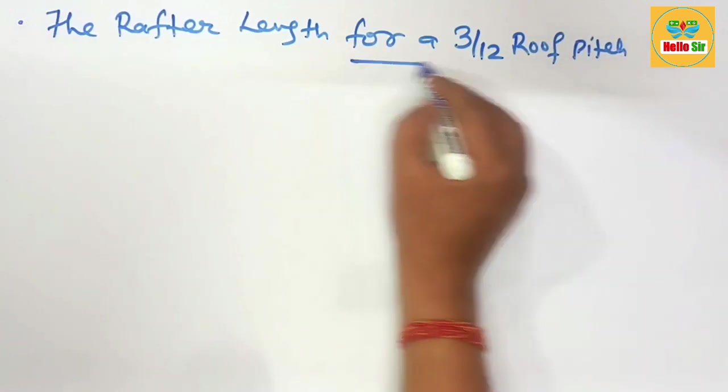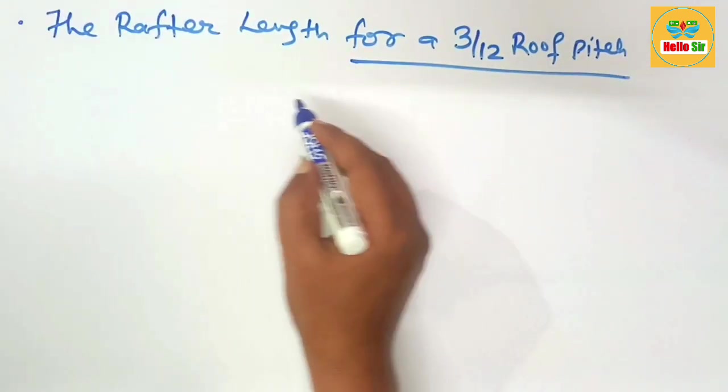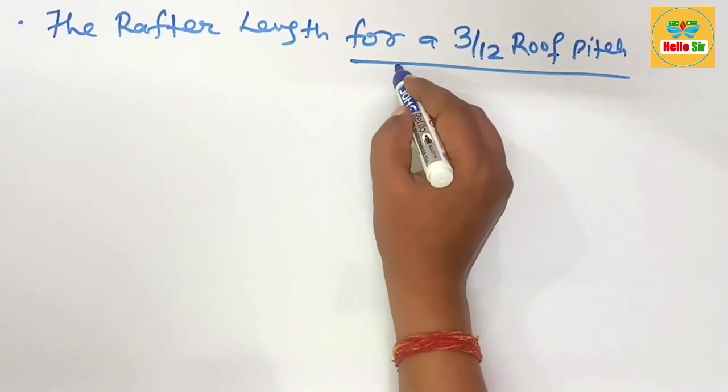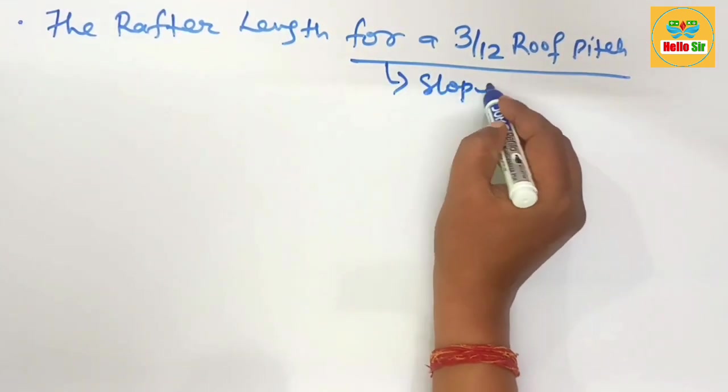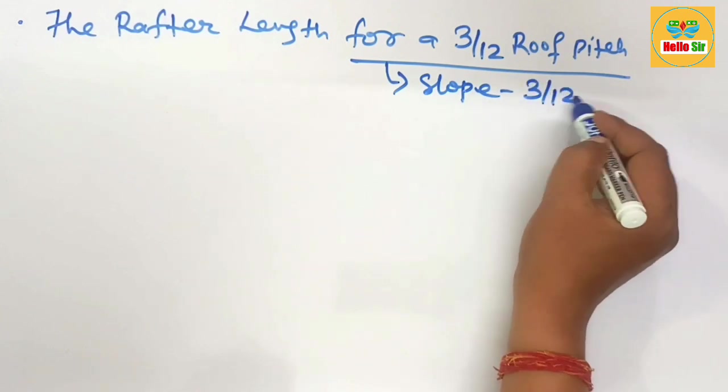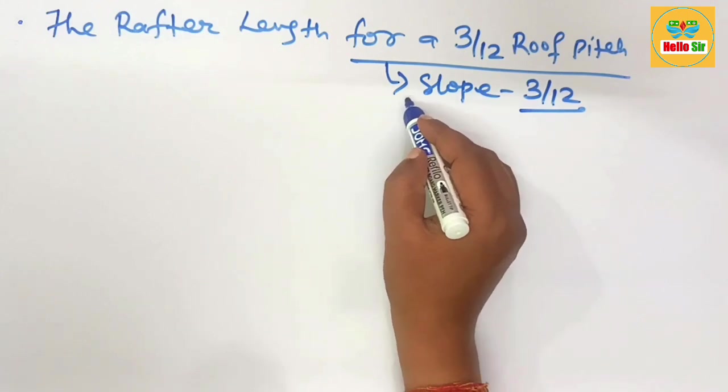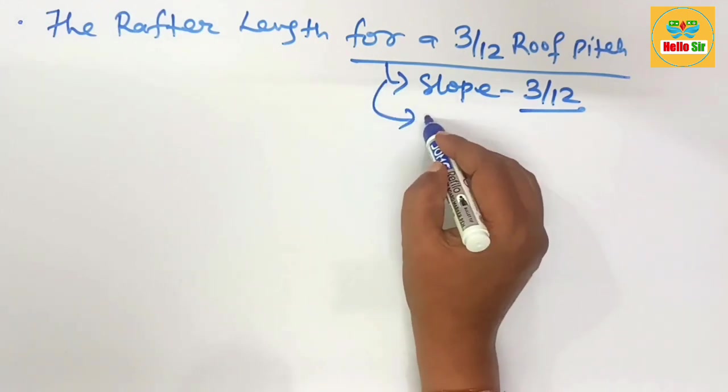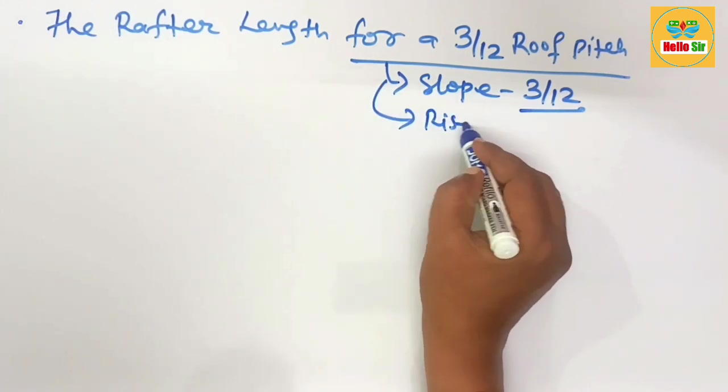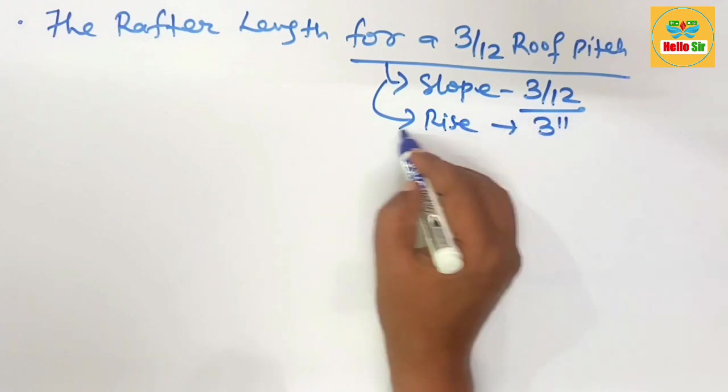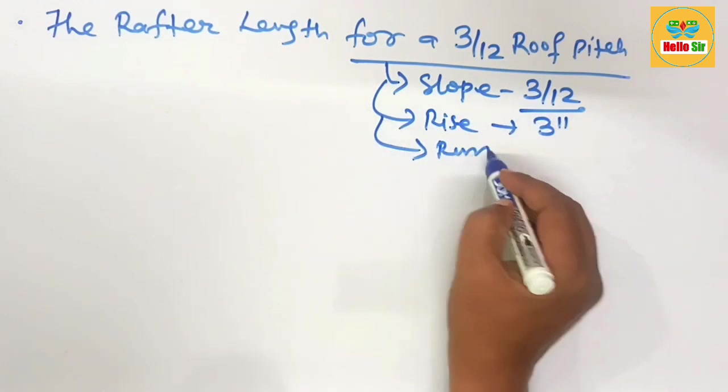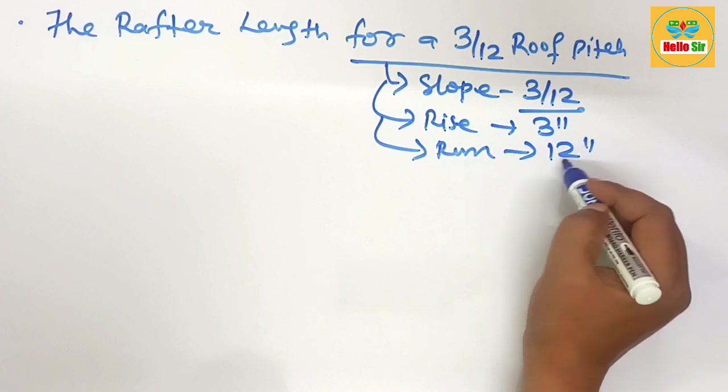Here you'll figure out the rafter length for a 3 by 12 roof pitch. The slope is 3 by 12, which means there are 3 inches of rise for every 12 inches of run. So the rise is 3 inches and the run is 12 inches.